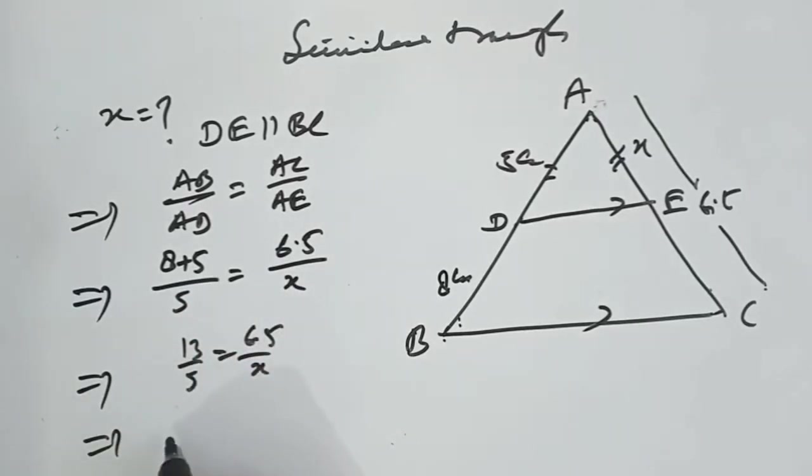Implies that cross multiplying this, we have x is equal to 6.5 into 5 upon 13. In fact, is equal to 2.5 as a result. Thank you.